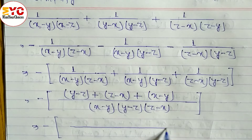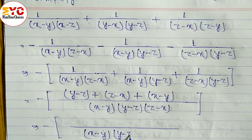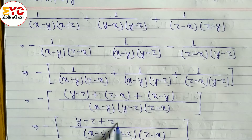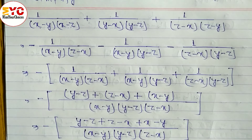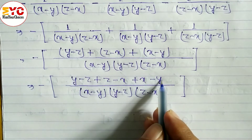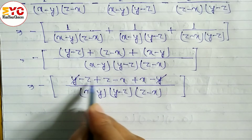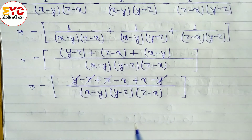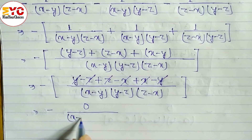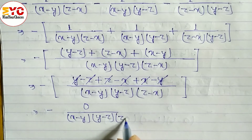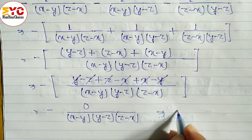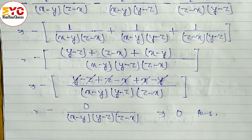Opening the brackets: (y minus z) plus (z minus x) plus (x minus y). Here minus z and plus z cancel, minus x and plus x cancel, and y cancels with minus y. What remains is 0. Zero over (x minus y)(y minus z)(z minus x) equals 0, so the answer is 0.